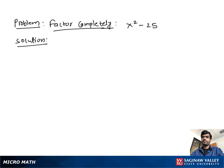Factor completely x squared minus 25. Here we see both terms look like perfect square form, so we can write x squared minus 25 as x squared minus 5 squared.